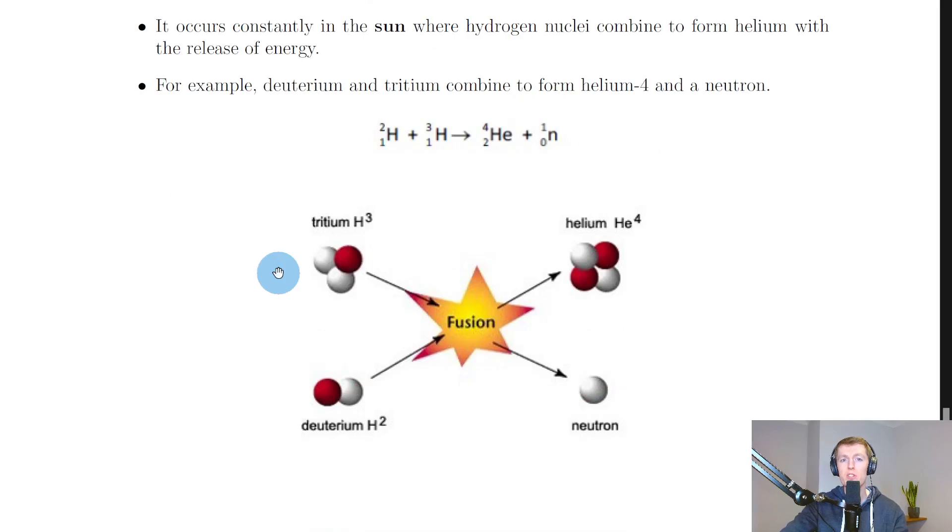So here's the example that we just saw in the simulation. For example, deuterium and tritium combine to form helium-4 and a neutron. So that's hydrogen-2 plus hydrogen-3 can combine to form helium-4 plus a neutron